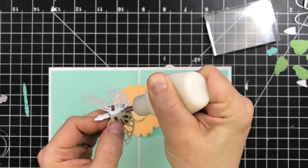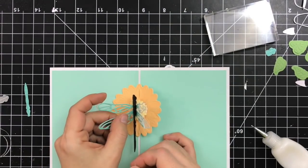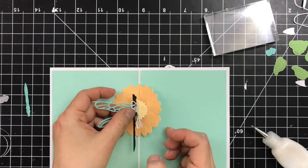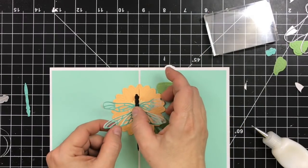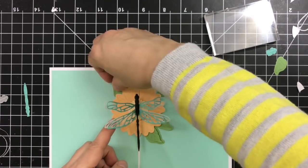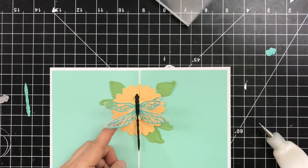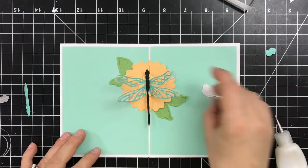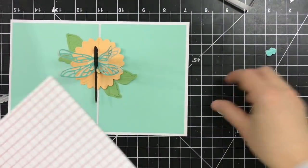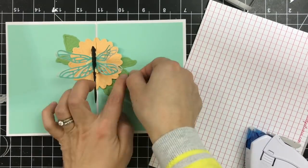Next I'm applying adhesive on that crease on the wings on the bottom. And I'm adhering on the crease on the center of the flower. I'm just going to hold it in place. I'm using Ranger Distress Medium. You can use any other strong adhesive. Make sure that you hold that nicely until it dries.